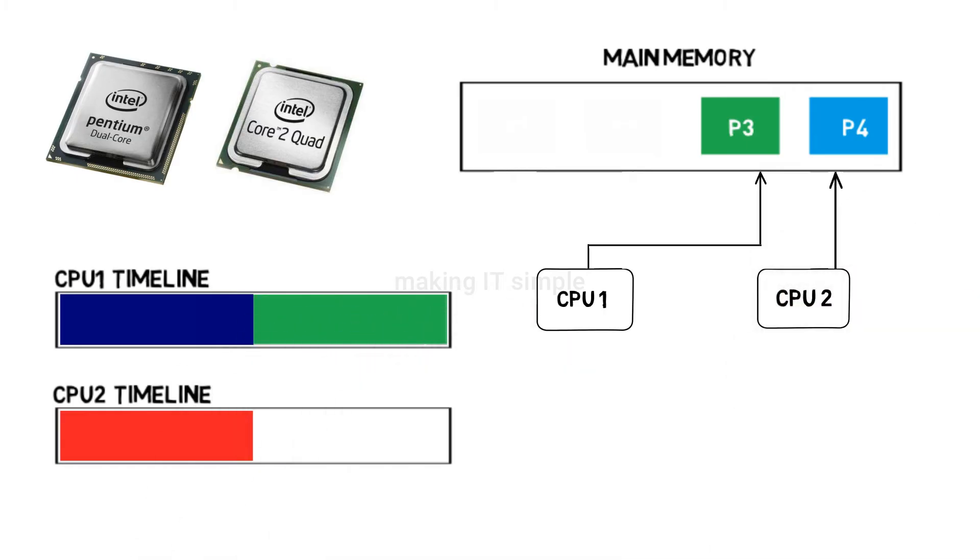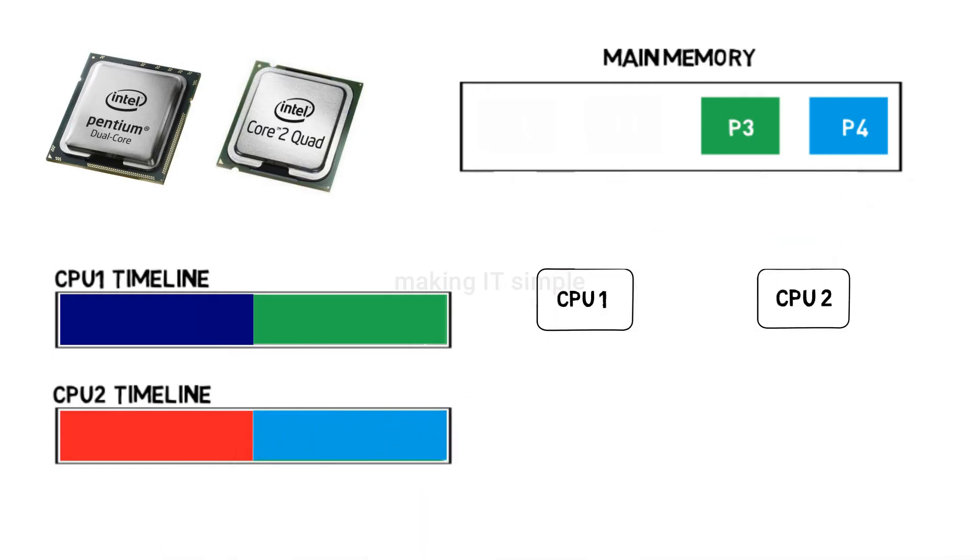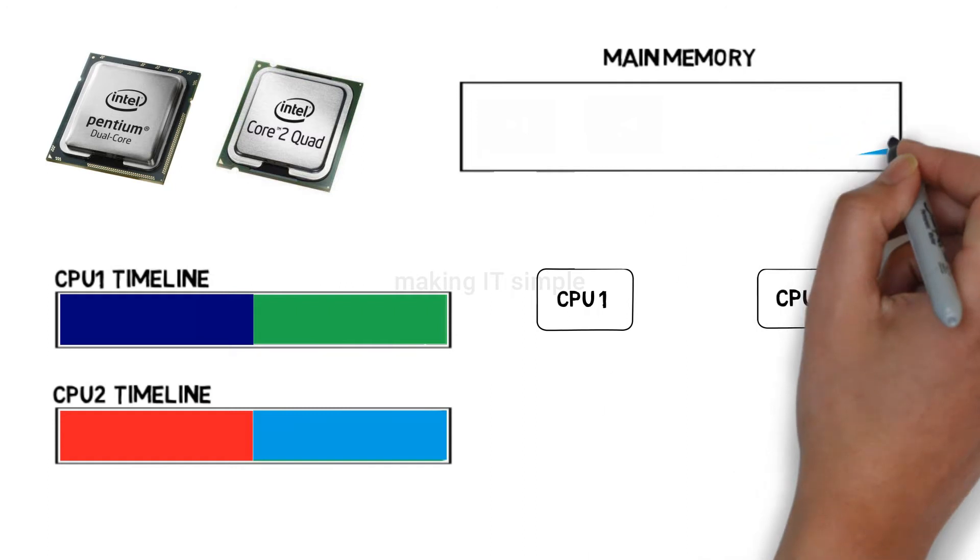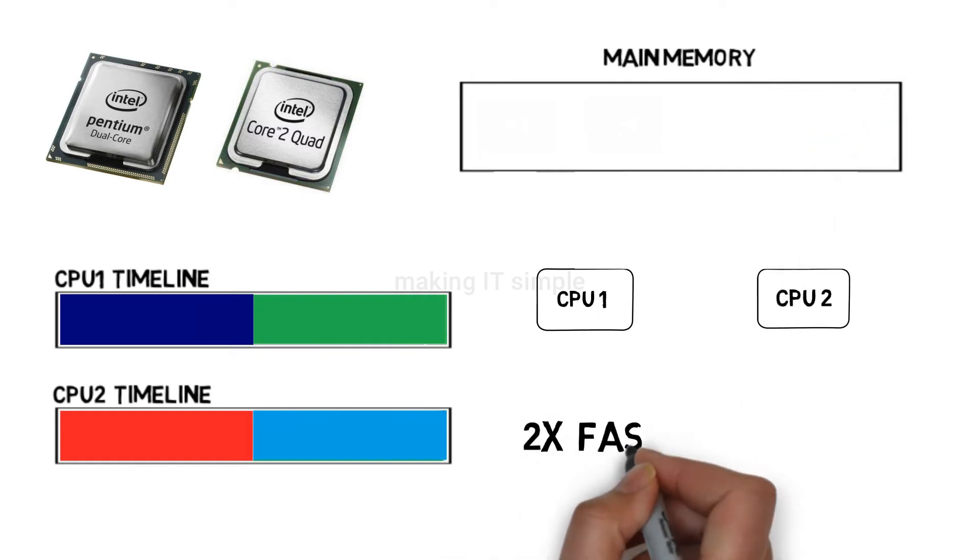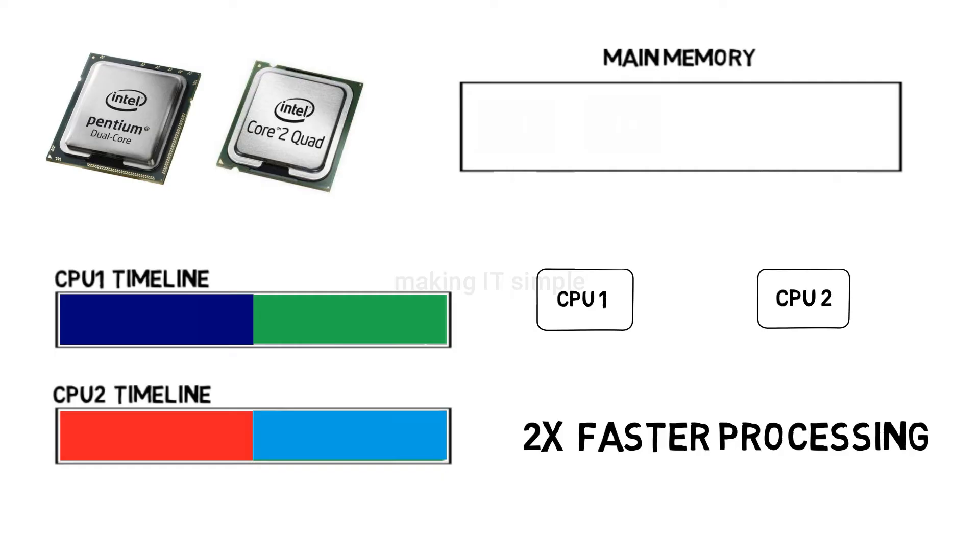Both the CPUs start the execution of the process which is assigned to them. This is done until all processes are executed. So by doing this, the system with two CPUs will execute the work two times faster than single-processor system.